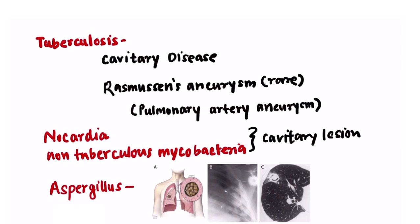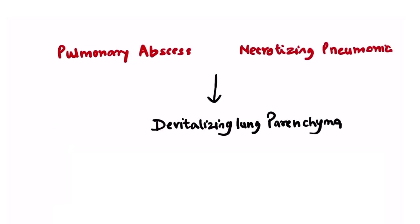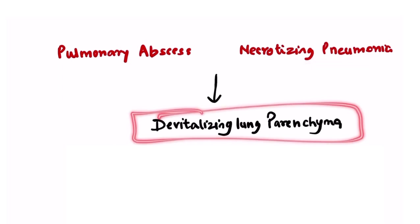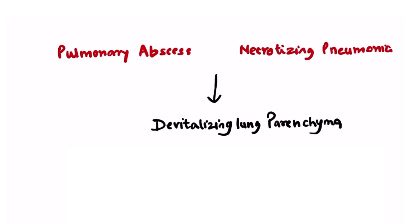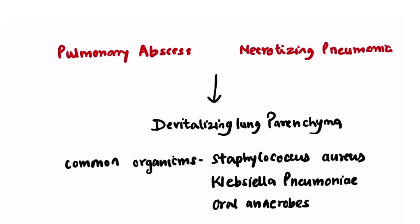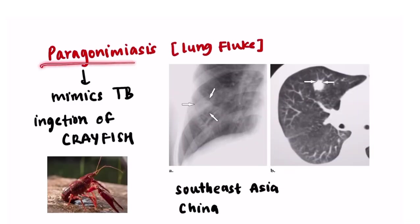Aspergillus is often associated with formation of a mycetoma, which forms inside the cavity and then bleeds. Conditions like pulmonary abscess and necrotizing pneumonia are associated with devitalization of lung parenchyma, leading to hemoptysis. The common organisms involved are Staphylococcus aureus, Klebsiella pneumoniae, and other oral anaerobes. Paragonimiasis is a parasitic infection.